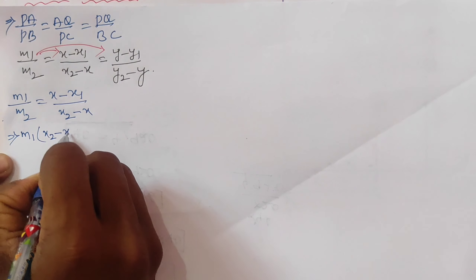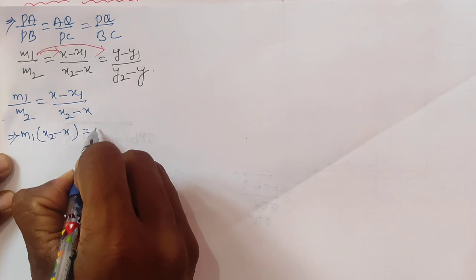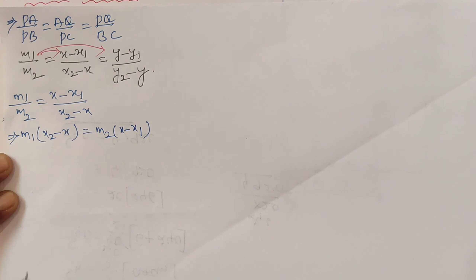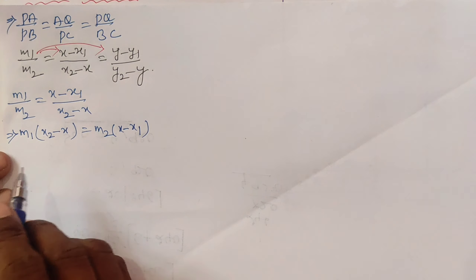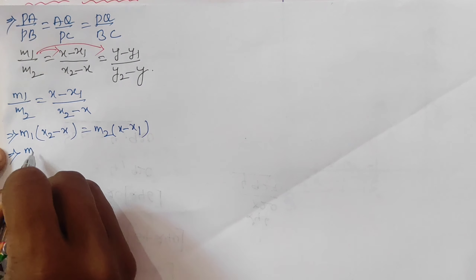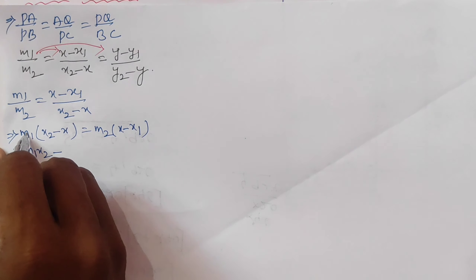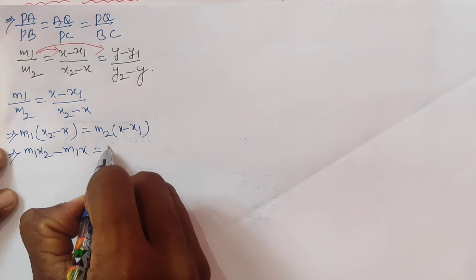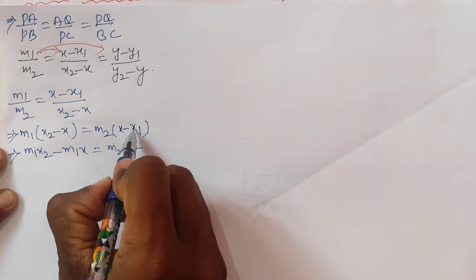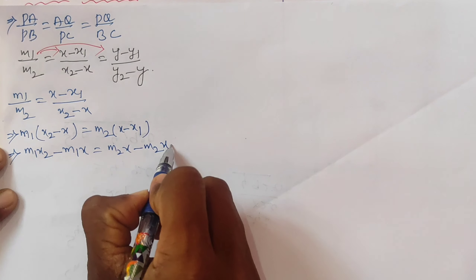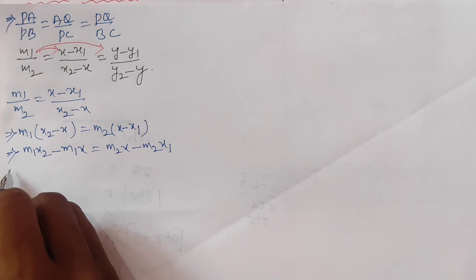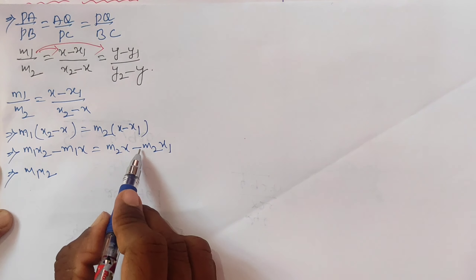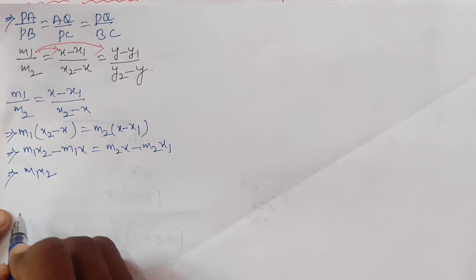Taking the x-part: m1 by m2 equals (x minus x1) by (x2 minus x). By cross multiplication: m1 into (x2 minus x) equals m2 into (x minus x1), which gives m1·x2 minus m1·x equals m2·x minus m2·x1.